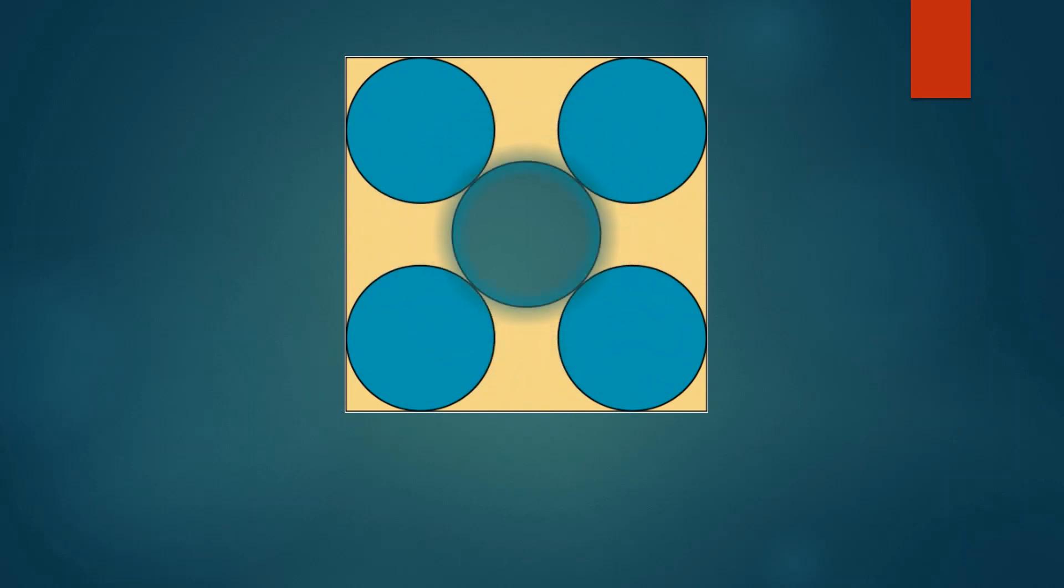As you can see, inside a square whose side is unknown, there are 5 circles. Four of which are placed in the corners in such a way that the sides of the square are tangent to the circles.